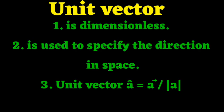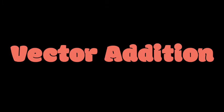A vector is called a unit vector when it has a magnitude of one unit. By convention, a unit vector is dimensionless — it has no dimension and no unit. A unit vector is used to specify the direction in space. We can find a unit vector by dividing a vector by its magnitude.